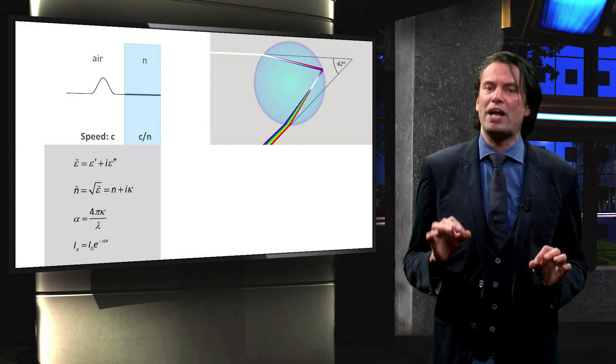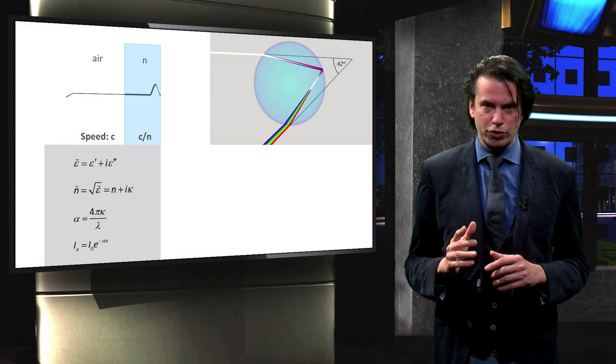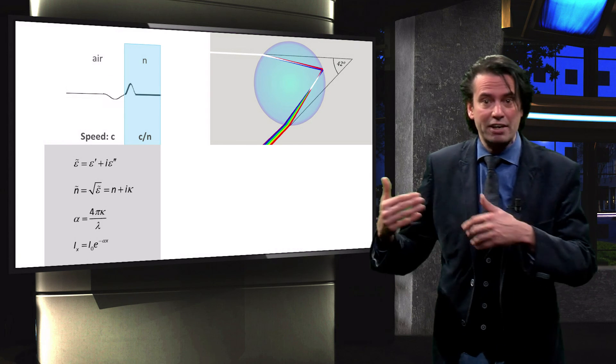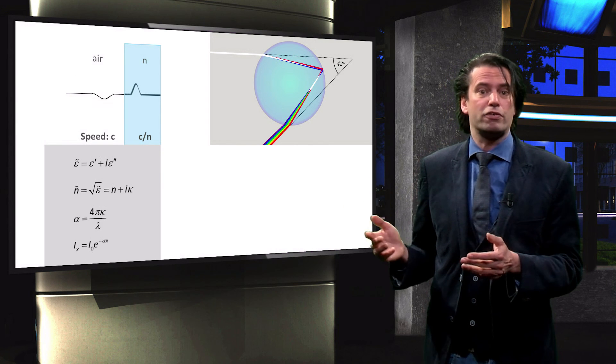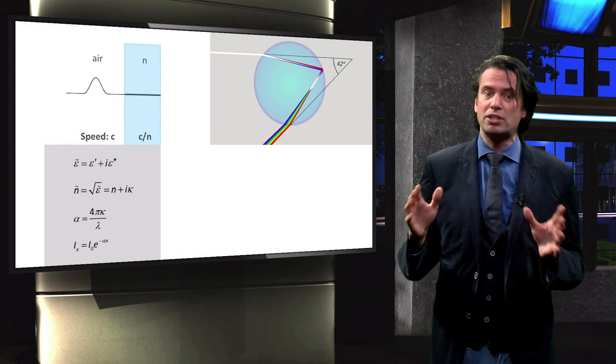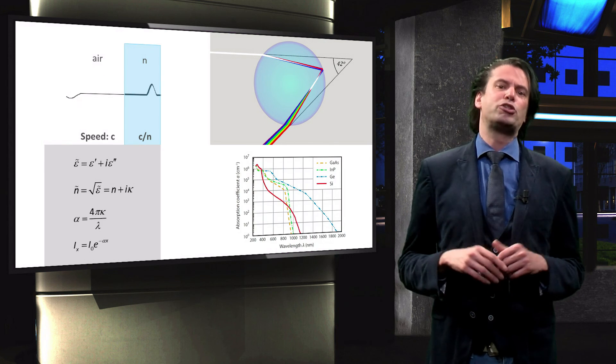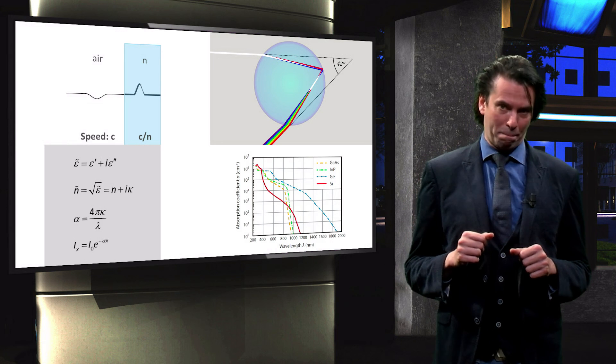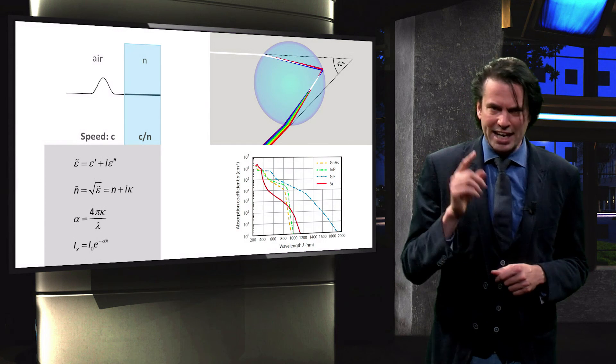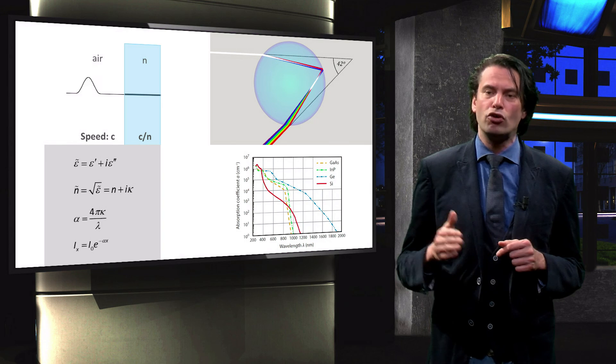We discussed how the complex electric permittivity leads to a complex refractive index. The real part of the complex refractive index describes the speed at which light propagates through the medium, while the imaginary part describes the extinction of light. The imaginary part of the refractive index is directly related to the absorption coefficient, which describes the light intensity absorption through the Lambert-Beer law. Finally, we saw how the absorption coefficient is strongly wavelength dependent and can vary orders of magnitude between wavelengths and semiconductors. In the next two videos, we will see how the refractive index determines the behavior of light at the interface of two media.